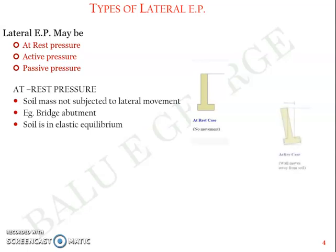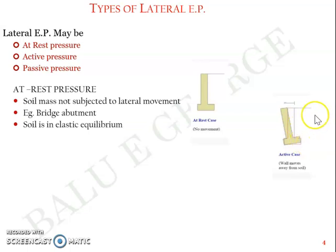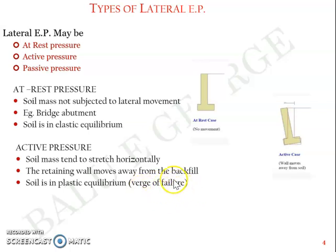The active case means the retaining wall was originally vertical retaining soil to the right side, but the soil has a tendency to move — it tries to stretch horizontally — and the retaining wall tends to move away from the soil. The soil behind the retaining wall is called backfill, as it fills the back portion of the wall. In active condition, the retaining wall moves away from the backfill and the soil is in plastic equilibrium, meaning it is at the verge of failure.